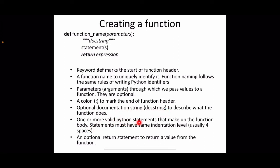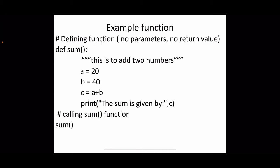One or more Python statements make up the function body. All statements within the function body must be at the same indentation level, just like any other block of statements. An optional return statement is used to return a value from the function. Here is a simple example of a function with no parameters and no return value — the simplest form of a function, intended to perform the addition of two numbers.